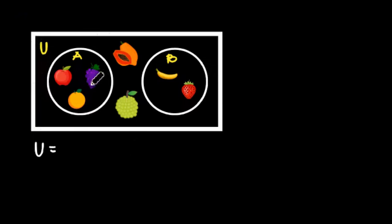Inside the universal set, there are two circles. These two circles represent given elements. For example, set A contains the elements of these fruits: apple, grapes, orange. And set B contains the elements of these two fruits: banana and strawberry. Outside the two sets is the papaya and atis. So it is possible for the elements to be outside the two sets as long as they're inside the universal set.